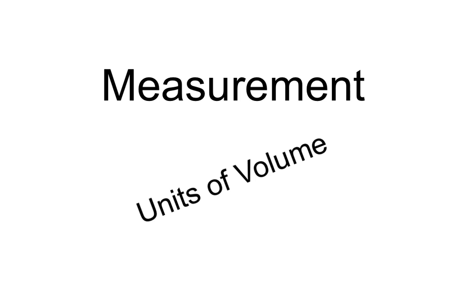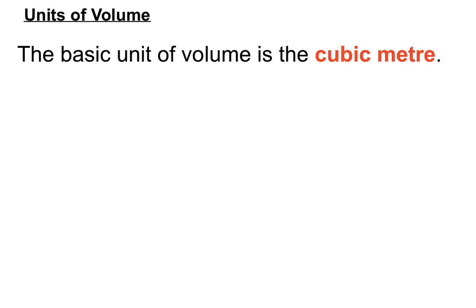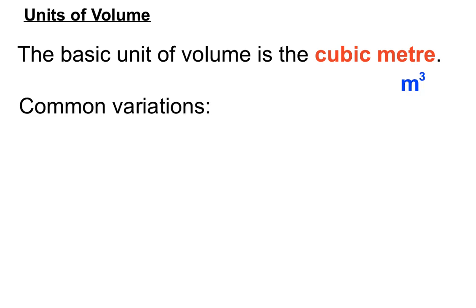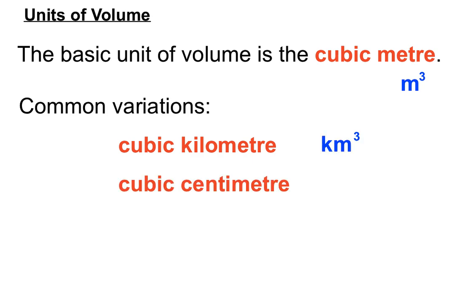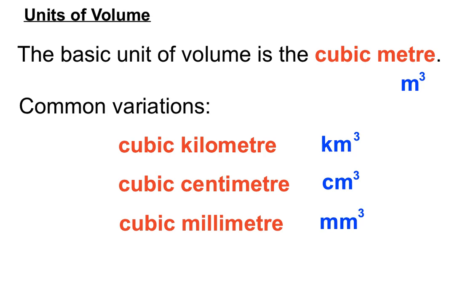Hi there and welcome to a measurement video on the units of volume. Quite an involved one, so buckle in. The basic unit of volume is the cubic meter — m³ is the symbol. Common variations include cubic kilometers (km³), cubic centimeters (cm³), and cubic millimeters (mm³). Those are the units we'll be working with and converting between.